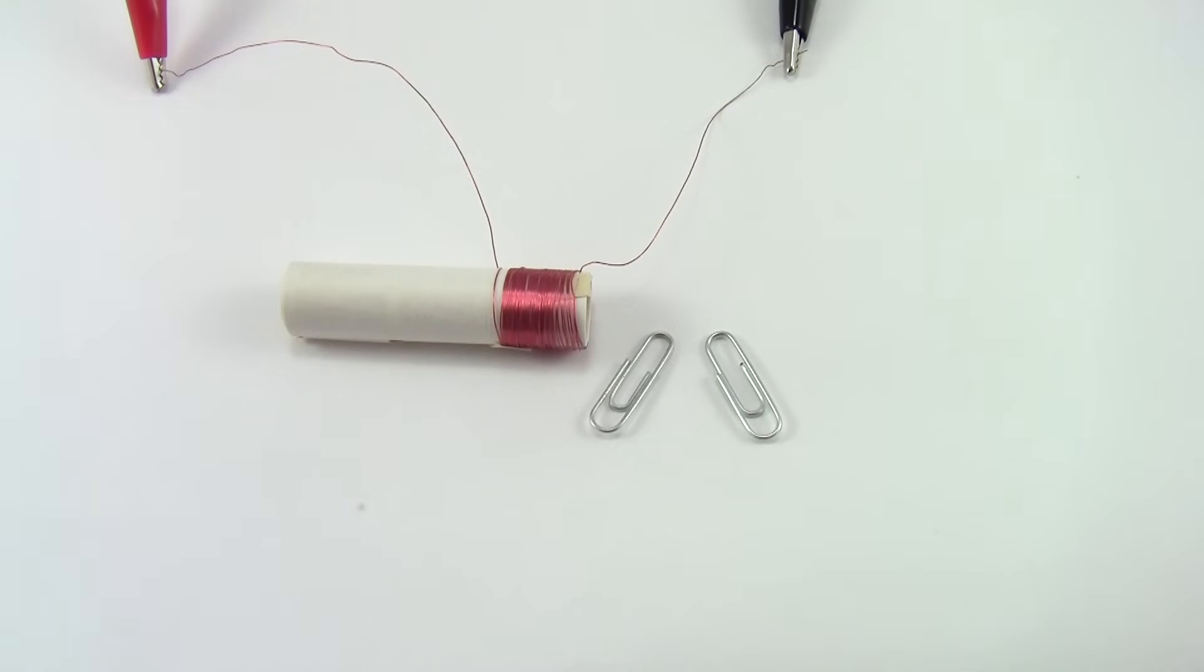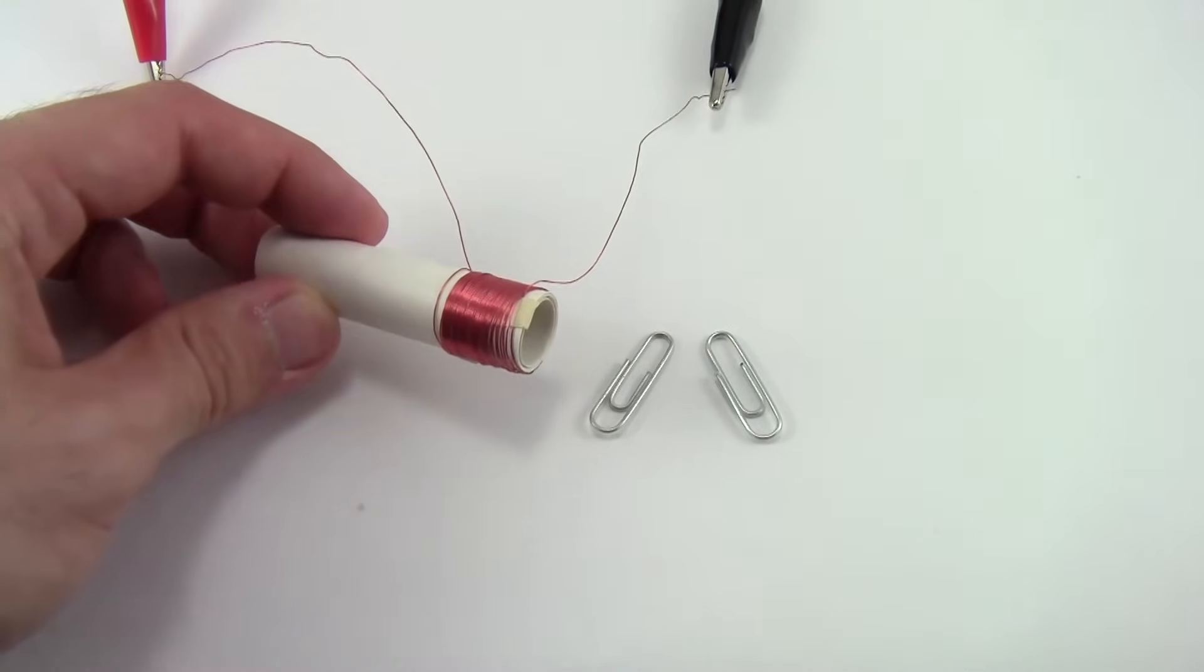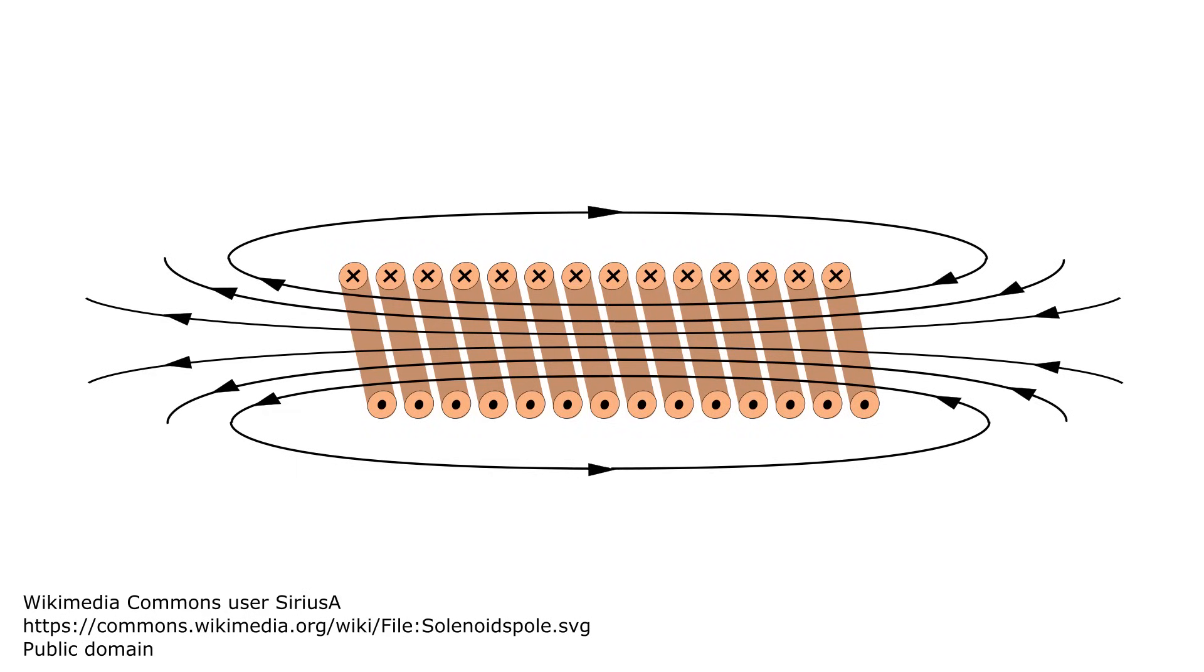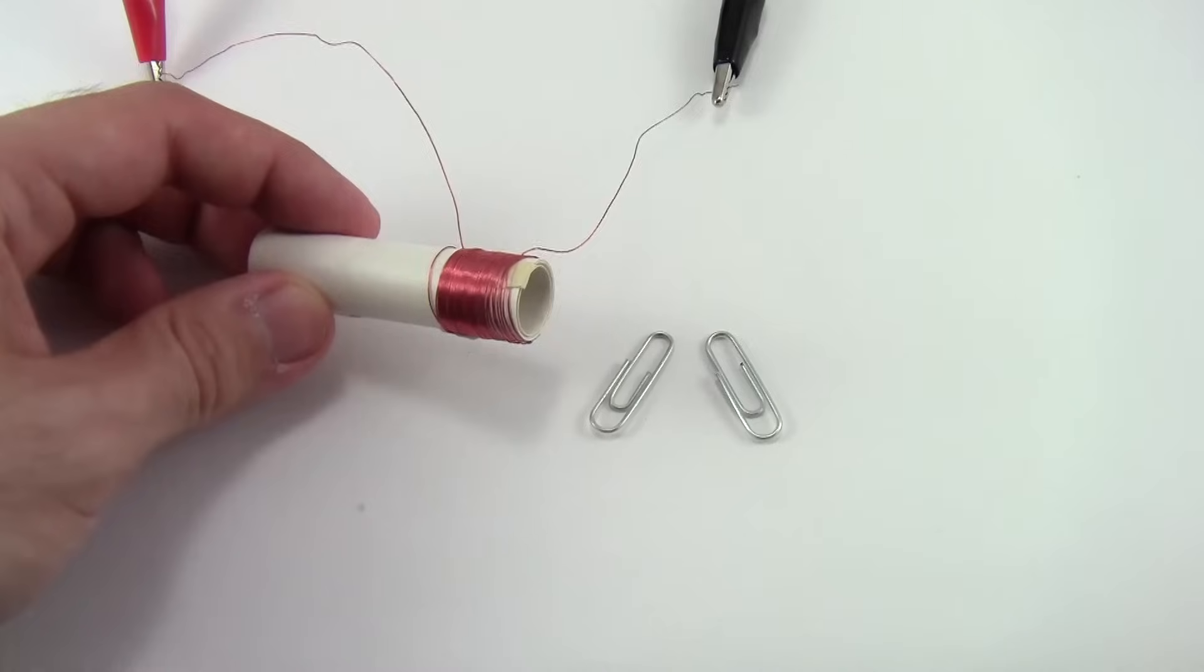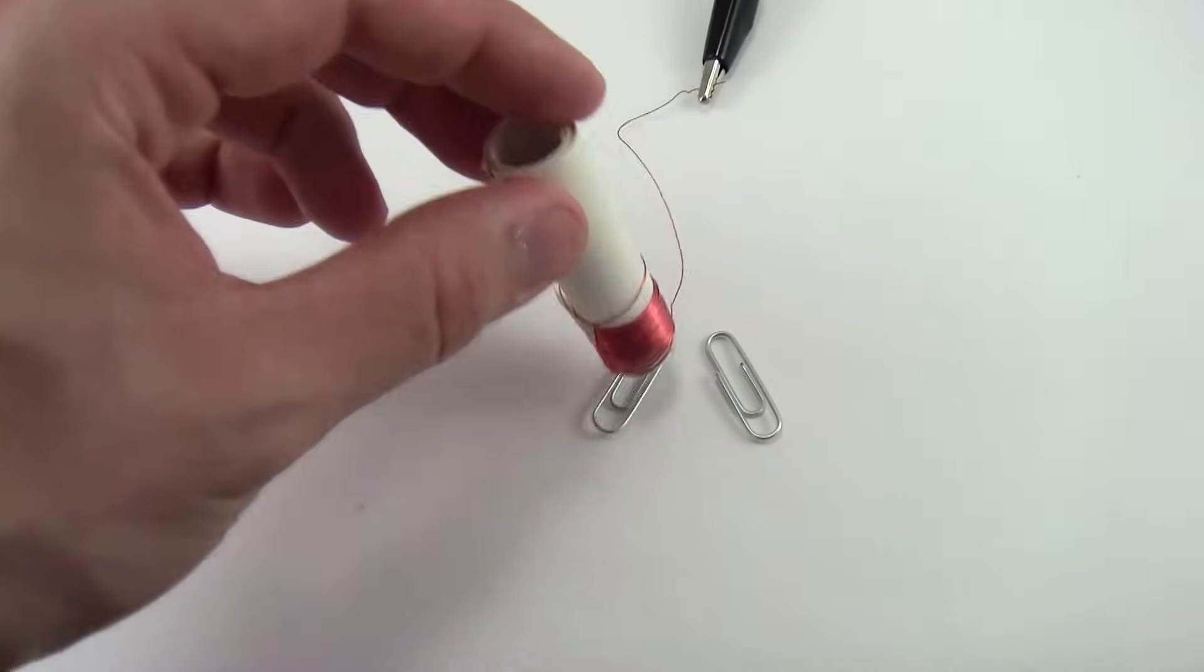You can make the magnetic field much stronger by wrapping the wire into a coil called a solenoid. This causes the fields around each individual turn of wire to add up to make a much stronger, more uniform magnetic field, similar to that of a bar magnet like this. However, you'll see that this coil of wire is still too weak to pick up an individual paper clip.